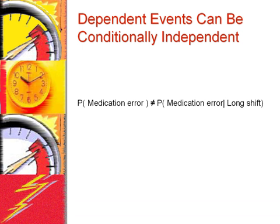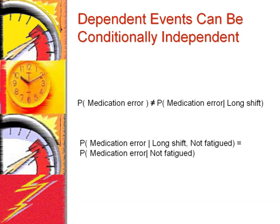For example, we can compare these statistics for long shifts in medication errors. The probability of a medication error is not equal to the probability of a medication error given a long shift. At the same time, in the population of employees that are not fatigued, even though they have long shifts, the two events are independent of each other. The probability of a medication error given a long shift and not fatigued is equal to the probability of a medication error given not fatigued. This example shows that related events may become independent under certain conditions.